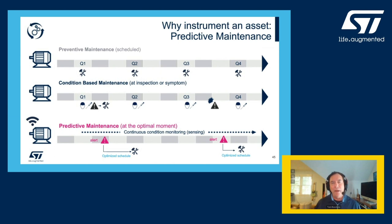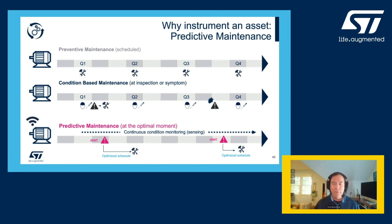Let's talk about Industry 4.0 and specifically machine maintenance, especially in light of those previous applications. A historical approach to machine maintenance depicted in the top row here is to schedule periodic maintenance. While this is simple to plan, it often results in downtime when the machine is taken offline. Plus, it's less efficient because we're often replacing perfectly good parts for the sake of prevention.